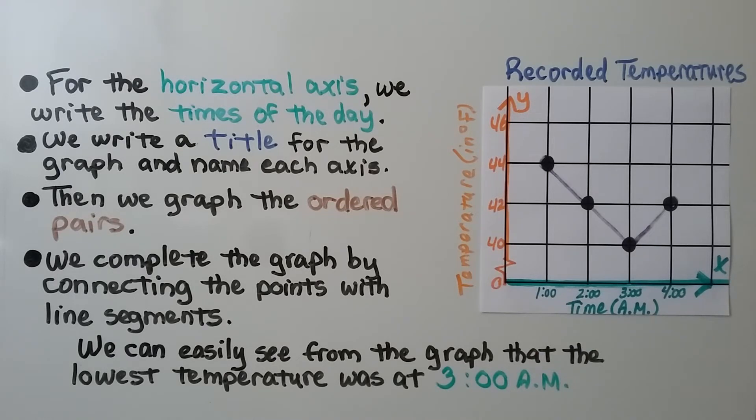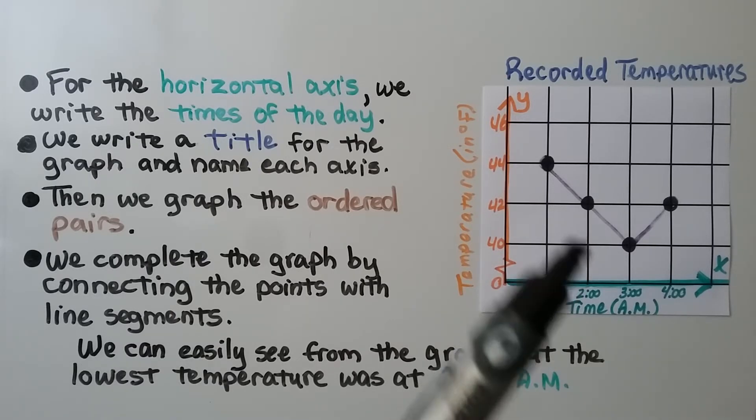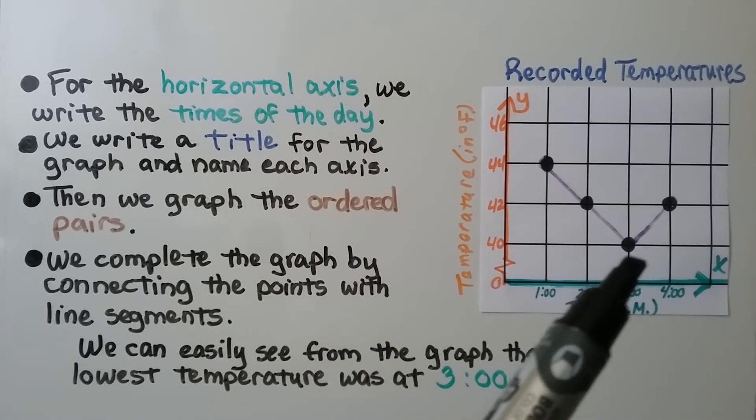Then we graph the ordered pairs, and we complete the graph by connecting the points with line segments, and we can easily see from the graph that the lowest temperature was at 3 o'clock a.m. That's where it went down, and then it started heading back up to get warmer again.